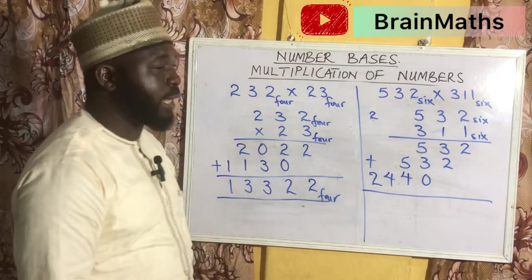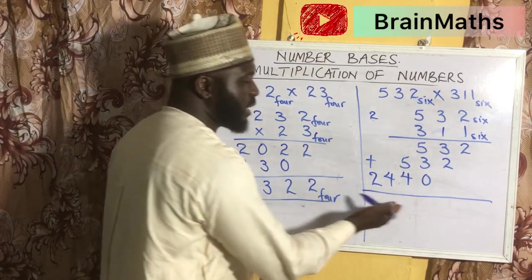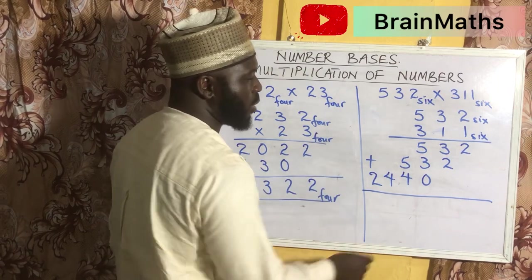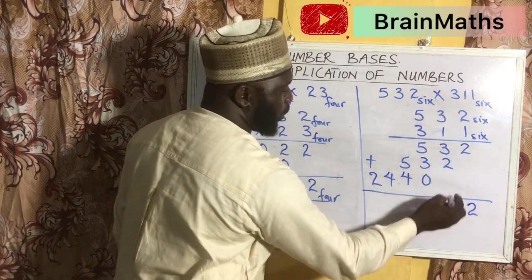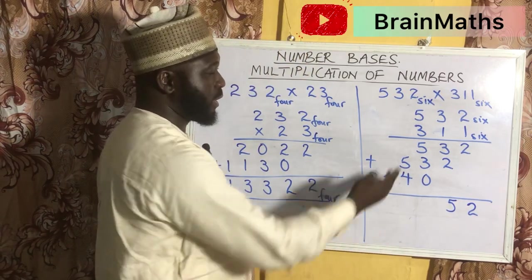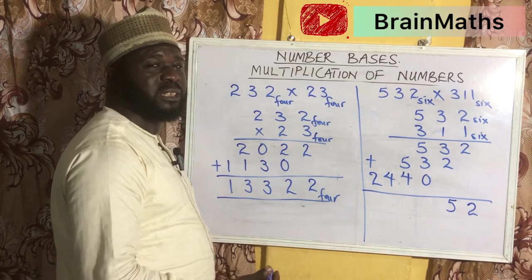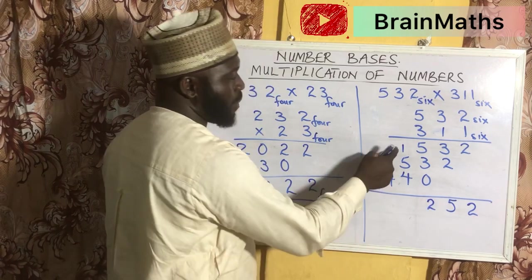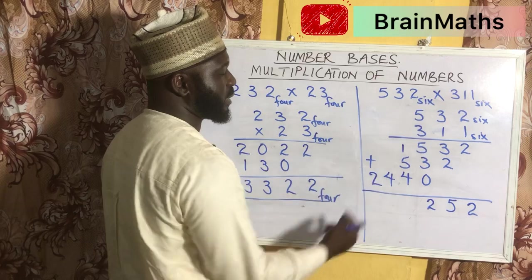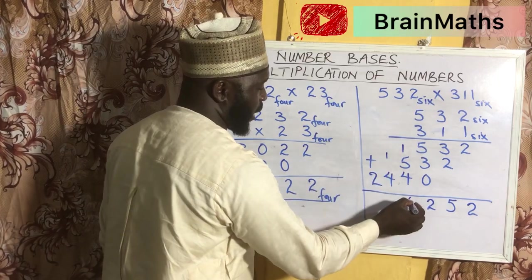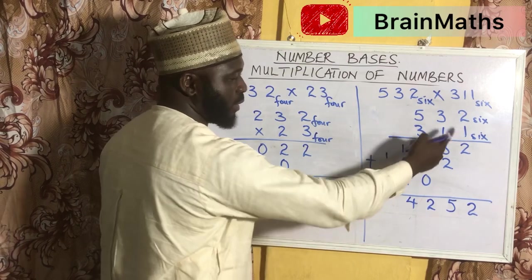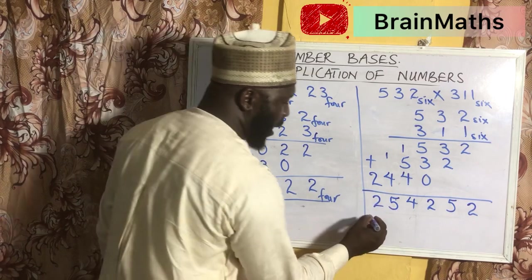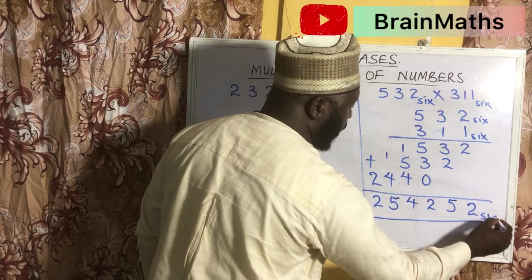Then we add all these numbers together in base 6. Note that no answer should exceed 6. 2 plus 0 is 2. 3 plus 2 is 5. 5 plus 3 is 8 — since this exceeds the base, how many 6s in 8? That is 1, remainder 2. 1 plus 5 is 6, plus 4 gives 10 — how many 6s in 10? That is 1, remainder 4. 1 plus 4 is 5 — not up to 6, so we write it down. And the last number is 2. So we have 254252, all in base 6.